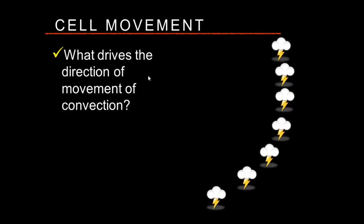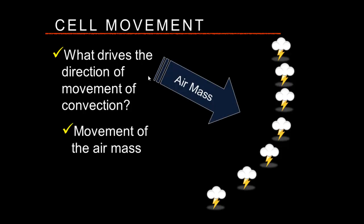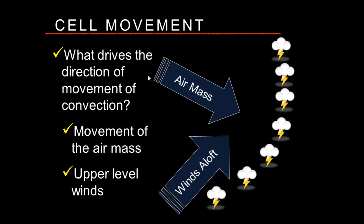What drives the direction of convective cell movement? Two things: the movement of the air mass and the upper-level winds. The air mass movement moves the line — in this case from northwest to southeast — while the winds aloft take individual cells and move them along a northeasterly track. Think of each cell like a railroad car, but the tracks themselves are also moving. The individual cell's final movement is a combination of the air mass motion and winds aloft, though the winds aloft are usually more dominating.